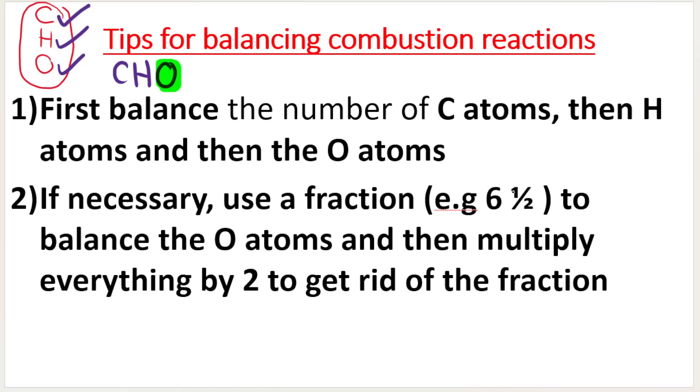If necessary, we might need to use a fraction to balance my oxygens. But then at the end of this process, if I've used a fraction, so for example, 6.5 or 7.5 or 2.5 or whatever, to get rid of your half or your 0.5, you need to multiply everything by 2. So to get rid of your 0.5, you would multiply everything by 2.